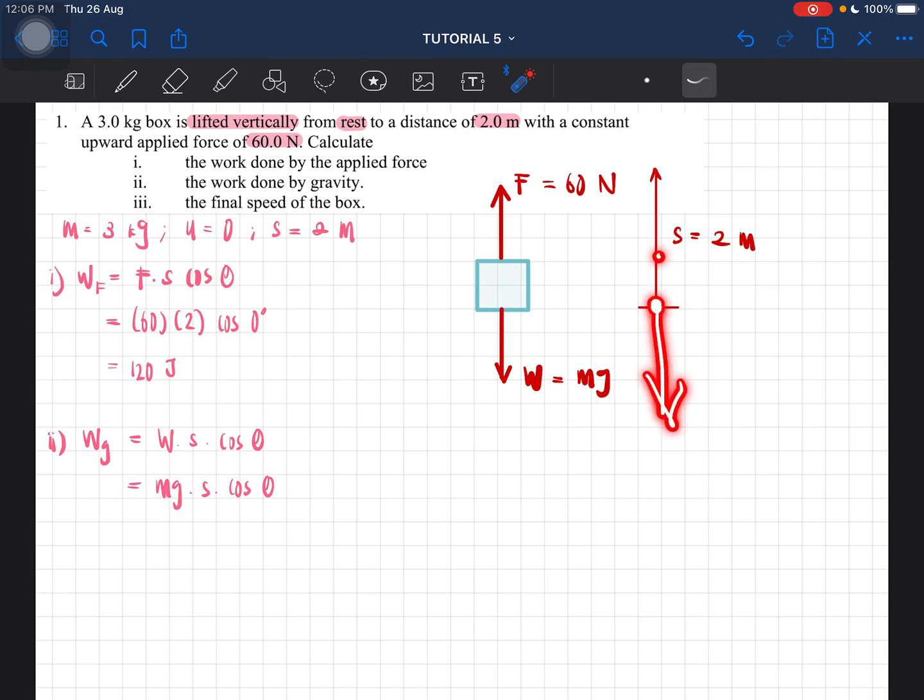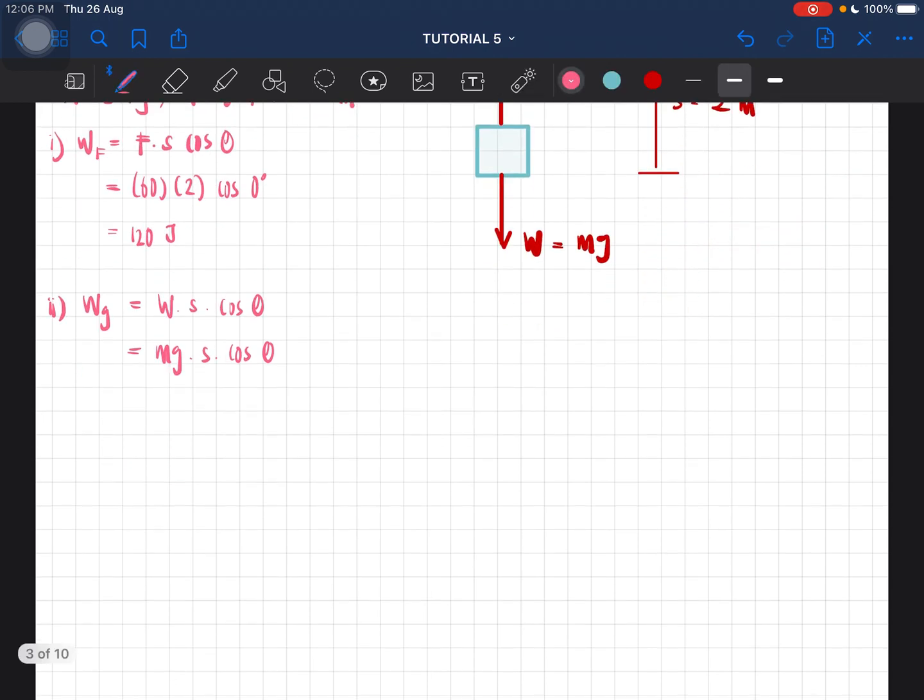How do I know it's 180 degrees? If we put the arrow here, we start from the arrow of the displacement going towards the weight's arrow, so this is 180 degrees. So mg is 3 × 9.81 × 2 × cos 180 degrees. That's minus 180 degrees, and then you'll get the value negative 58.86 joules.